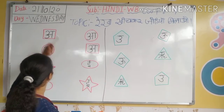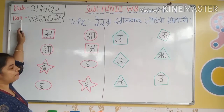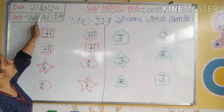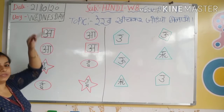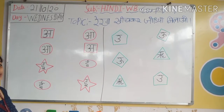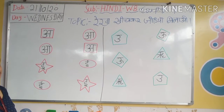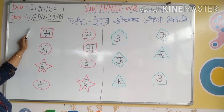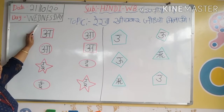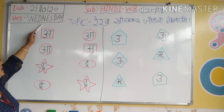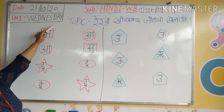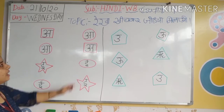First of all, which date is today? Tell me kids, which date is today? 21, 10, 2020. Which day is today? Tell me kids, which day is today? Wednesday. Spelling of Wednesday: W-E-B-E-N-E-S-B-A-5. Wednesday.